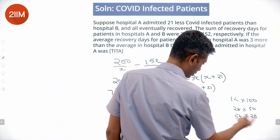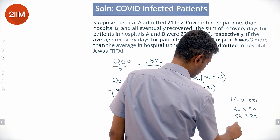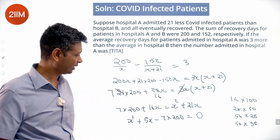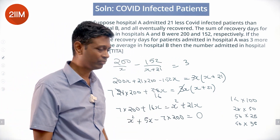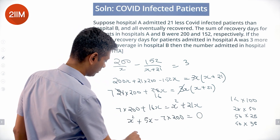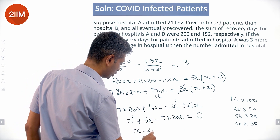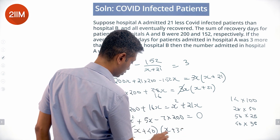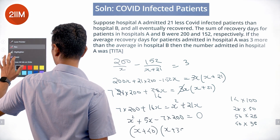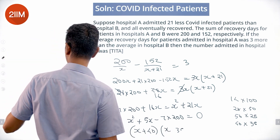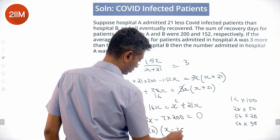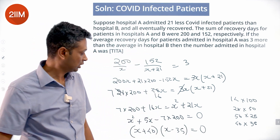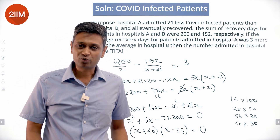Taking one 5 on one side and the 7 on the other gives 40×35. So the factorization is (x+40)(x-35) equals 0. Therefore x could be minus 40 or plus 35. Since it cannot be negative, x equals 35.